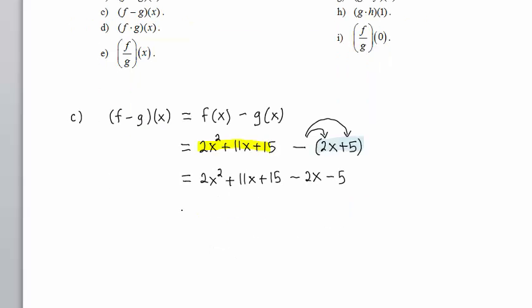We write minus 5. Now we gather like terms. We have 2X squared. The 11X and the minus 2X become plus 9X. Positive 15 minus 5 is plus 10.